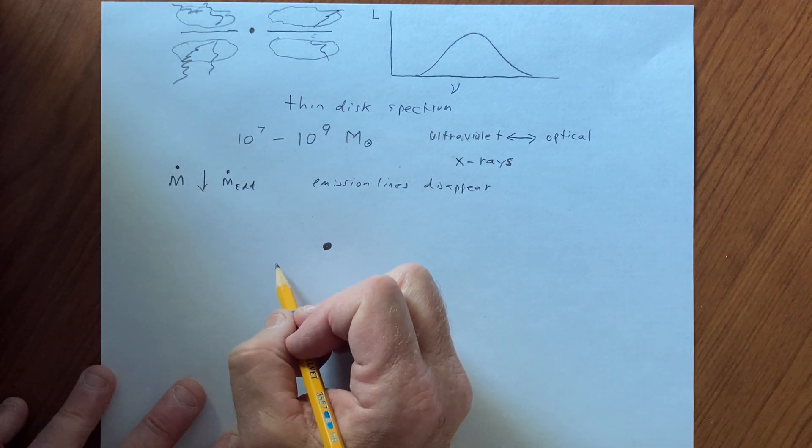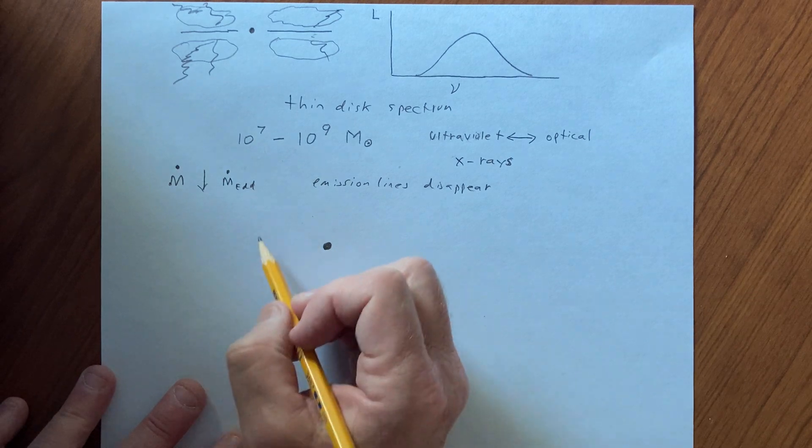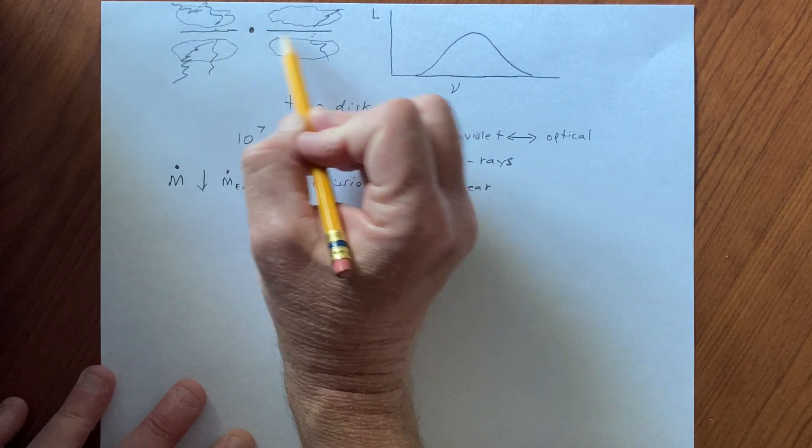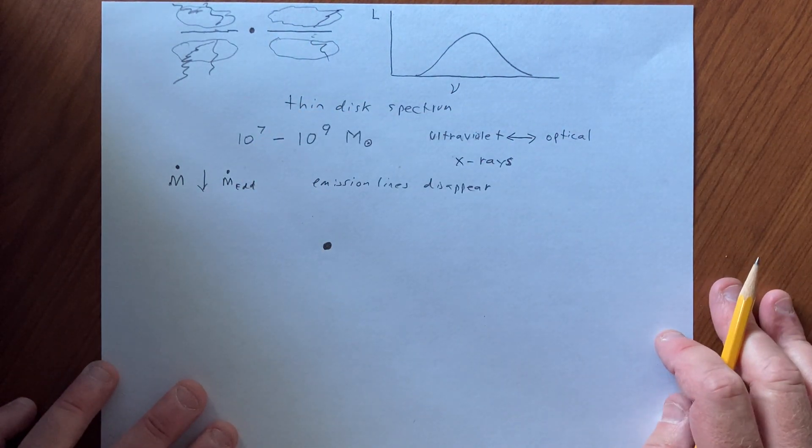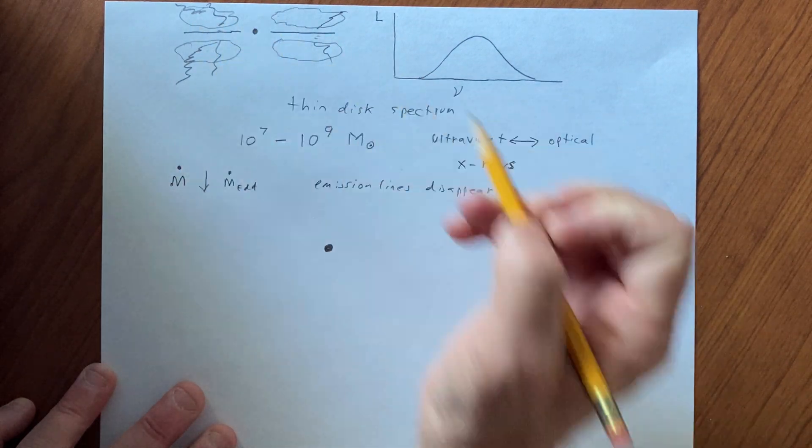And so if we don't have a thin disk, and the accretion rates are very low, the density, so the rate at which the material releases its energy depends on its density. If the density is low, the material doesn't release its energy, and as a result it can't sort of flatten out into a thin disk.